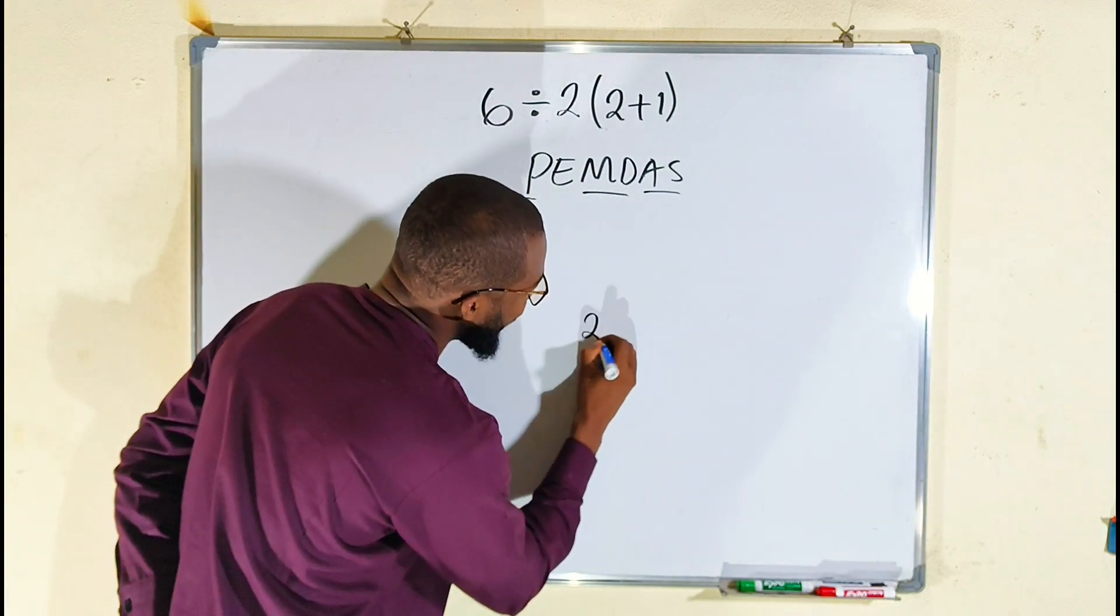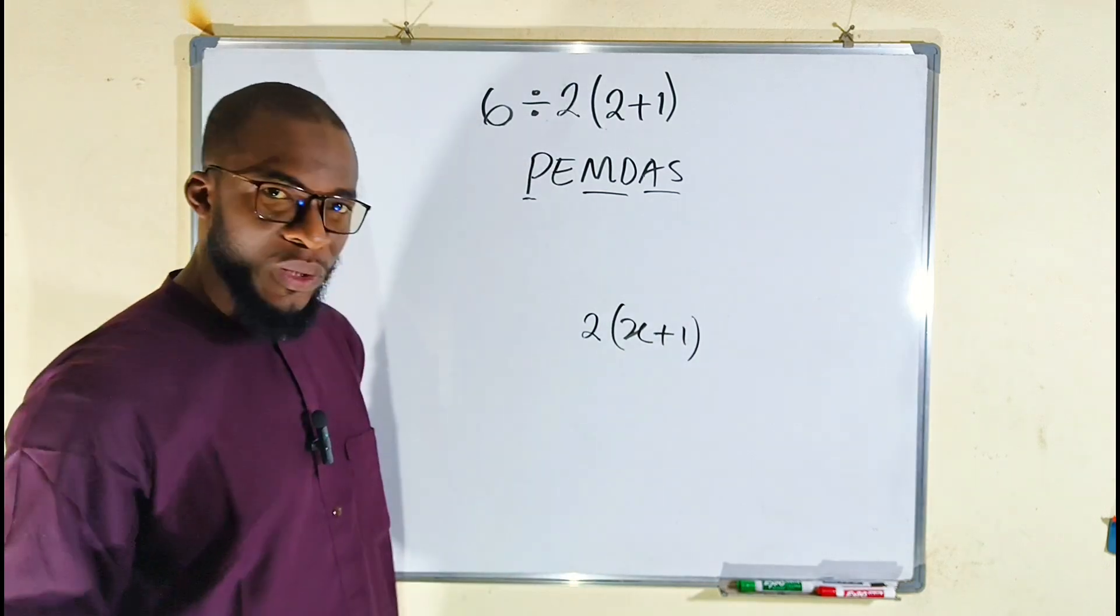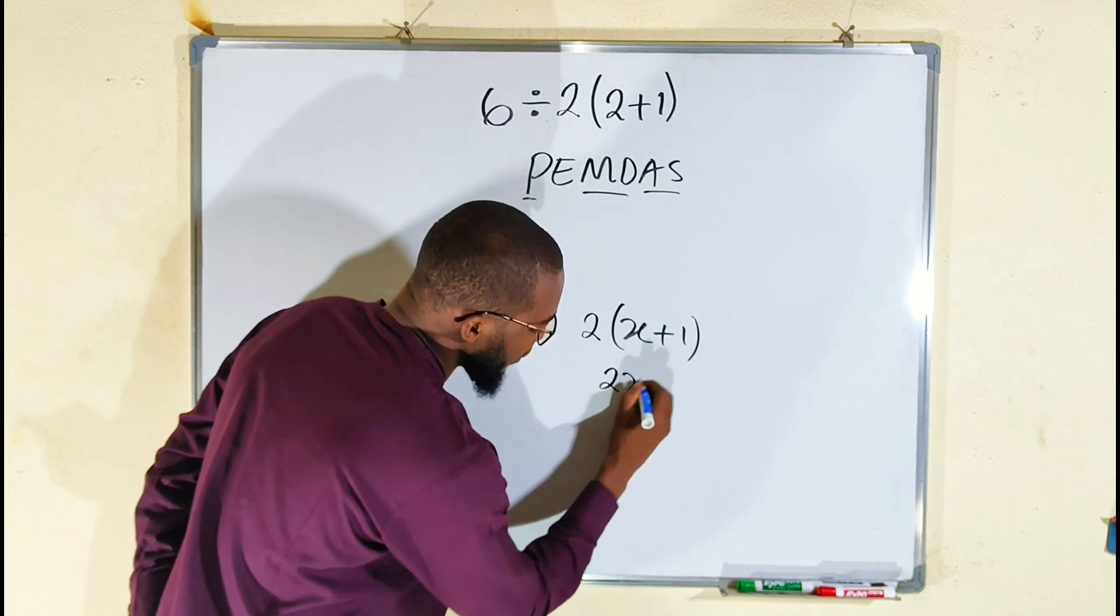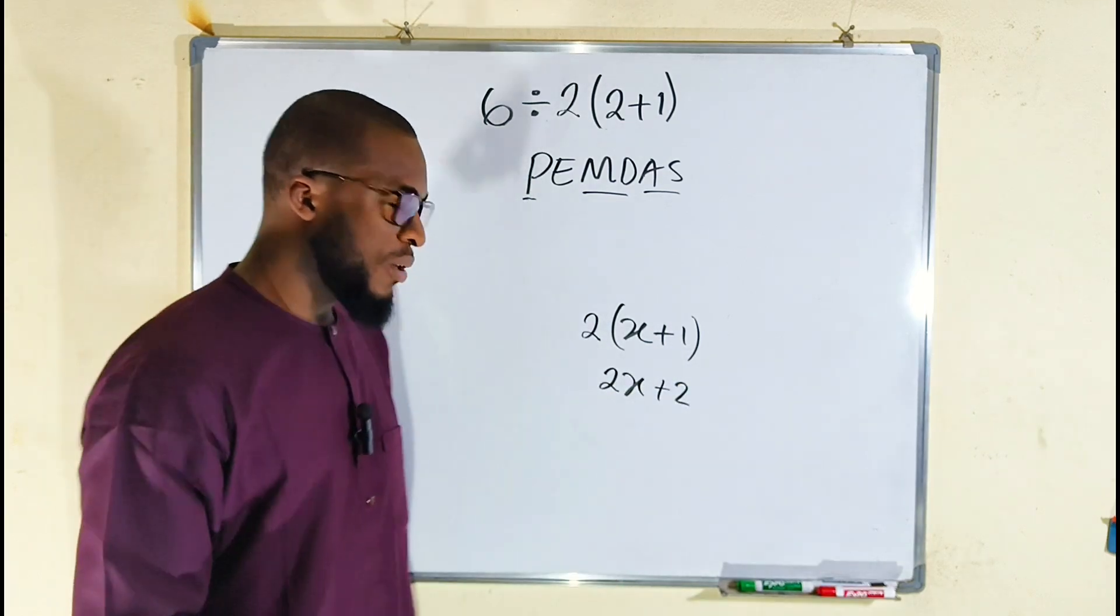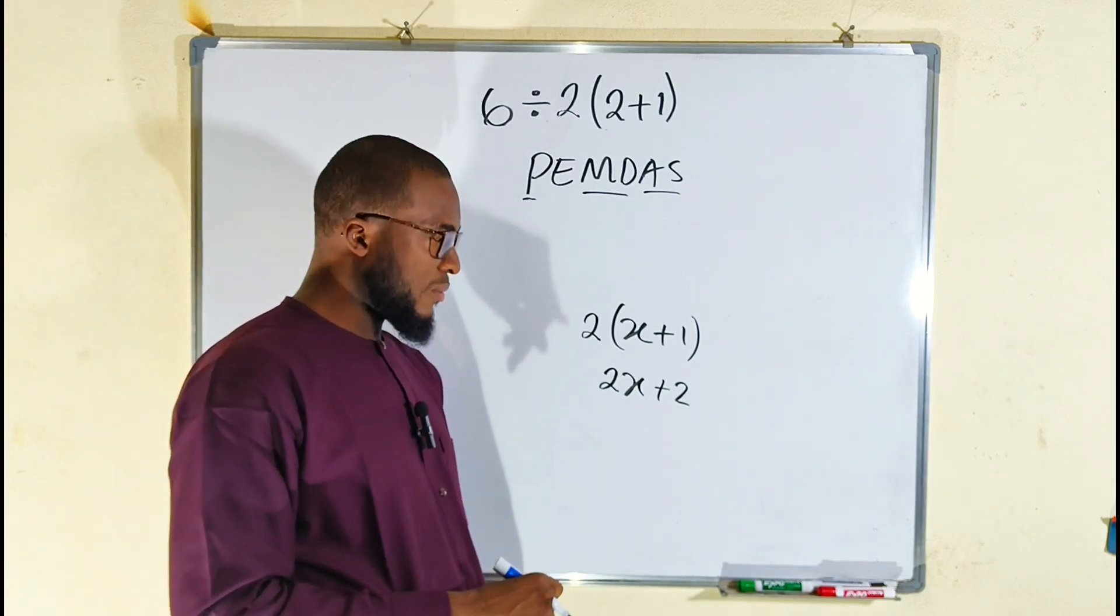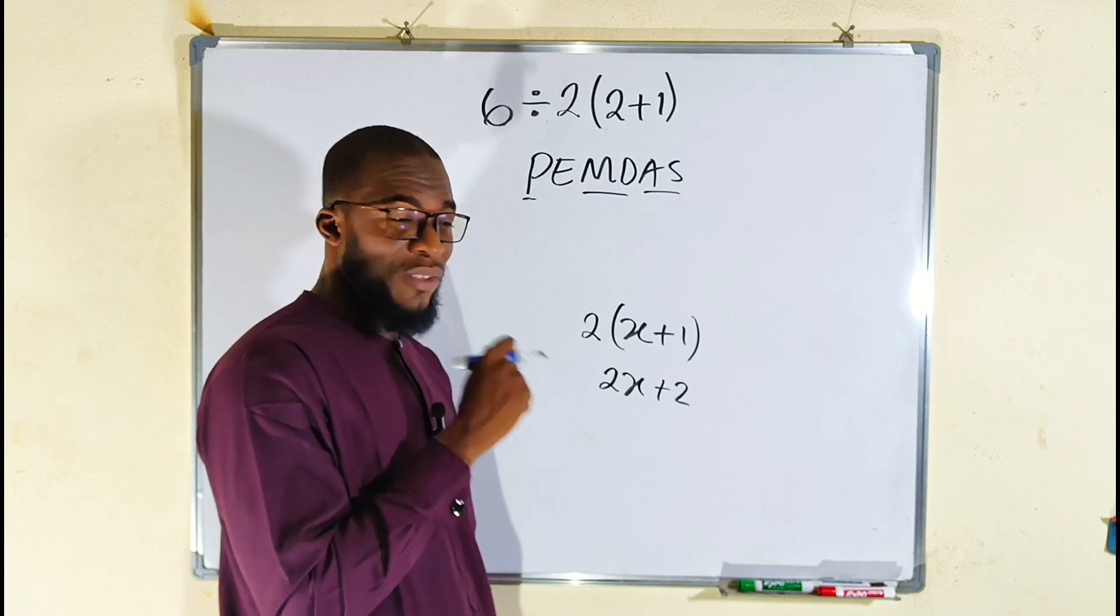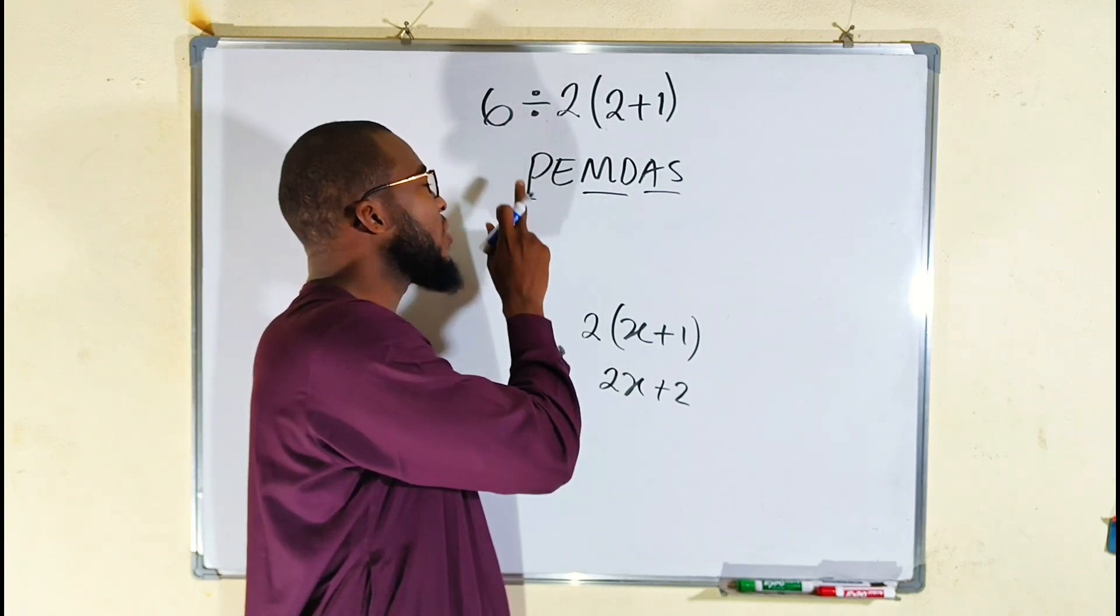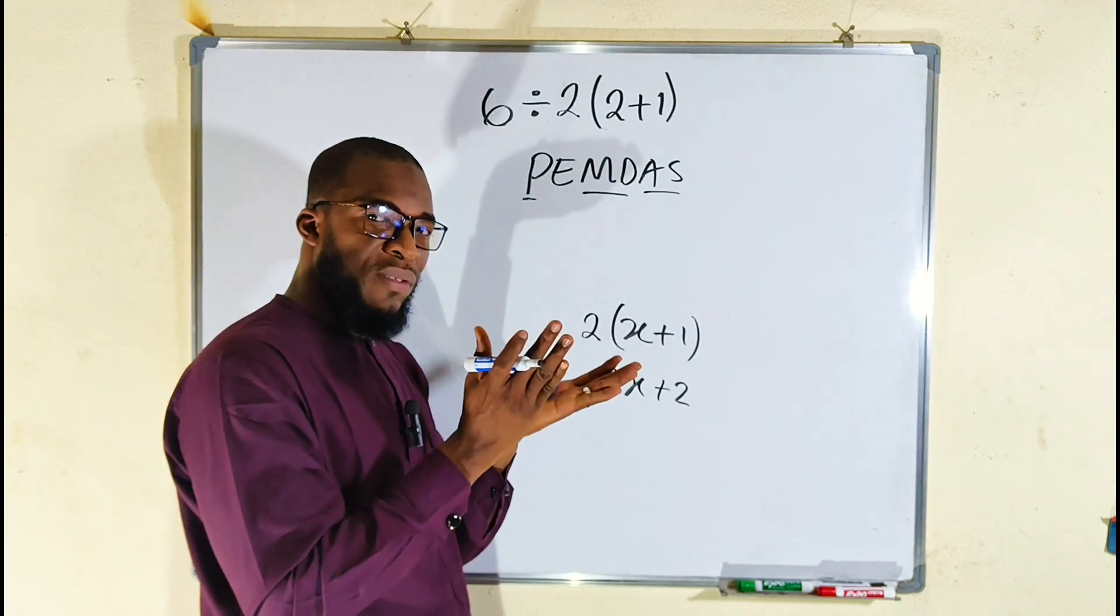Remember, if you have 2 multiplied by x plus 1, for example, 2 times x is 2x, 2 times 1 is 2. Did you know what I just did? This is called distribution. In mathematics, we call this distribution. But this P does not mean distribution. It means only parenthesis.